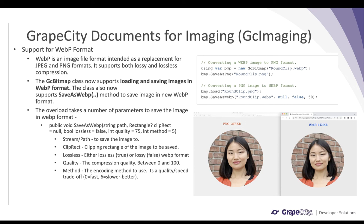The saveAsWebp method also takes the encoding method parameter, which defines quality and rendering speed on a range of 0 to 6. In the first code example, an image in WebP format is loaded into GcBitmap and saved as PNG. In the second example, an image in PNG format is loaded into GcBitmap and saved as WebP using the available parameters.